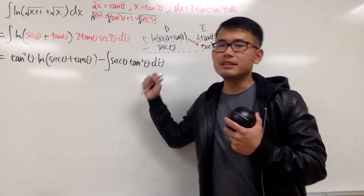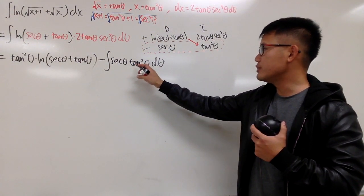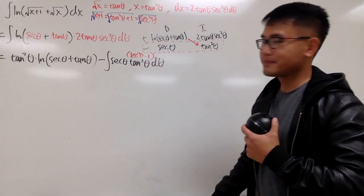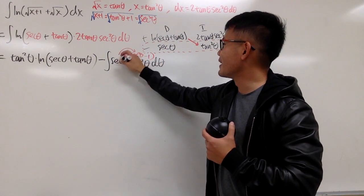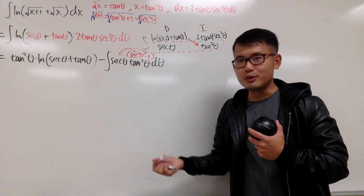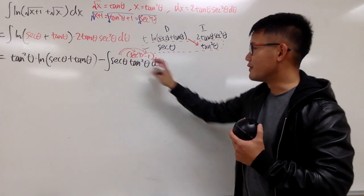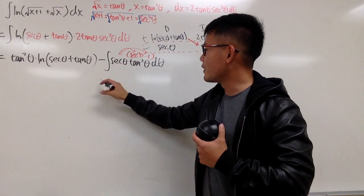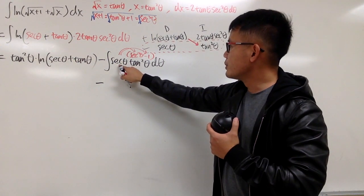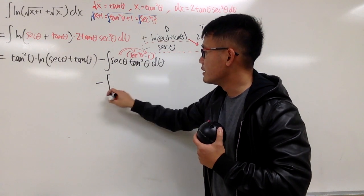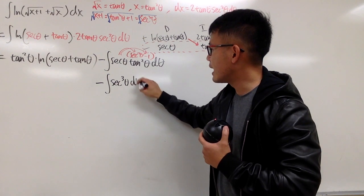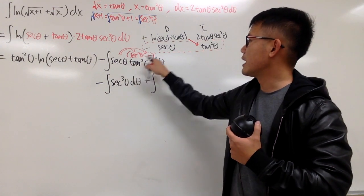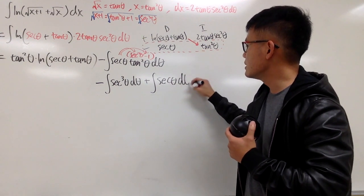Now we notice that tangent squared theta equals secant squared theta minus 1. So we distribute: secant theta times secant squared theta gives secant to the third power, and secant theta times 1 gives secant to the first power. So this becomes: minus the integral of secant cubed theta d theta, plus the integral of secant theta d theta.